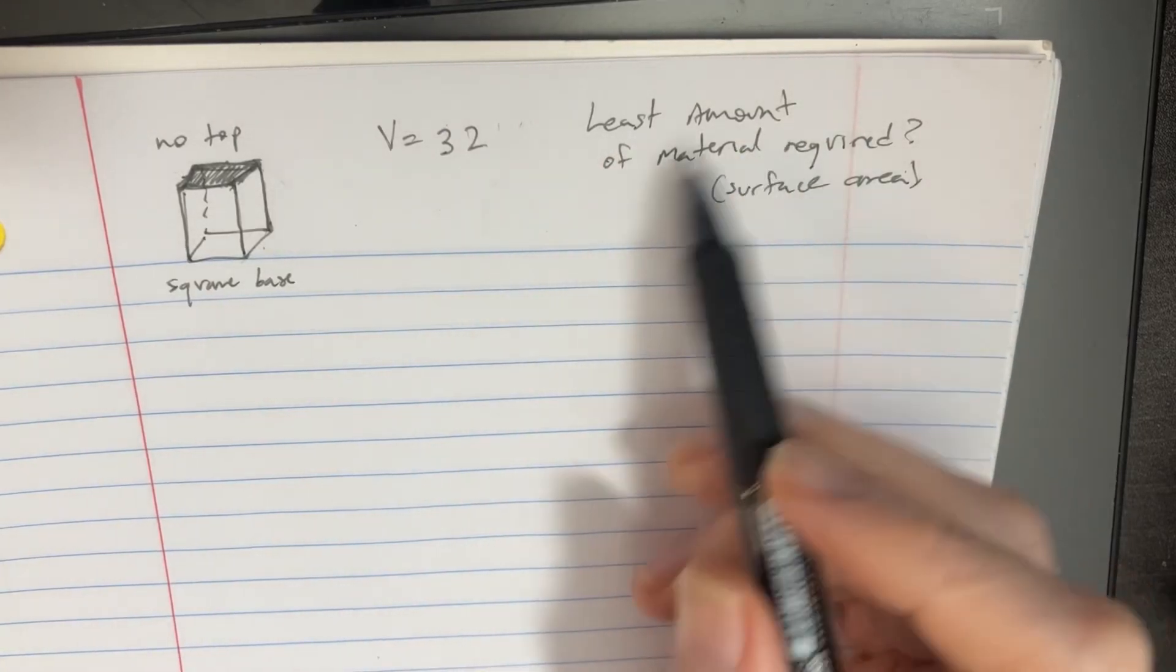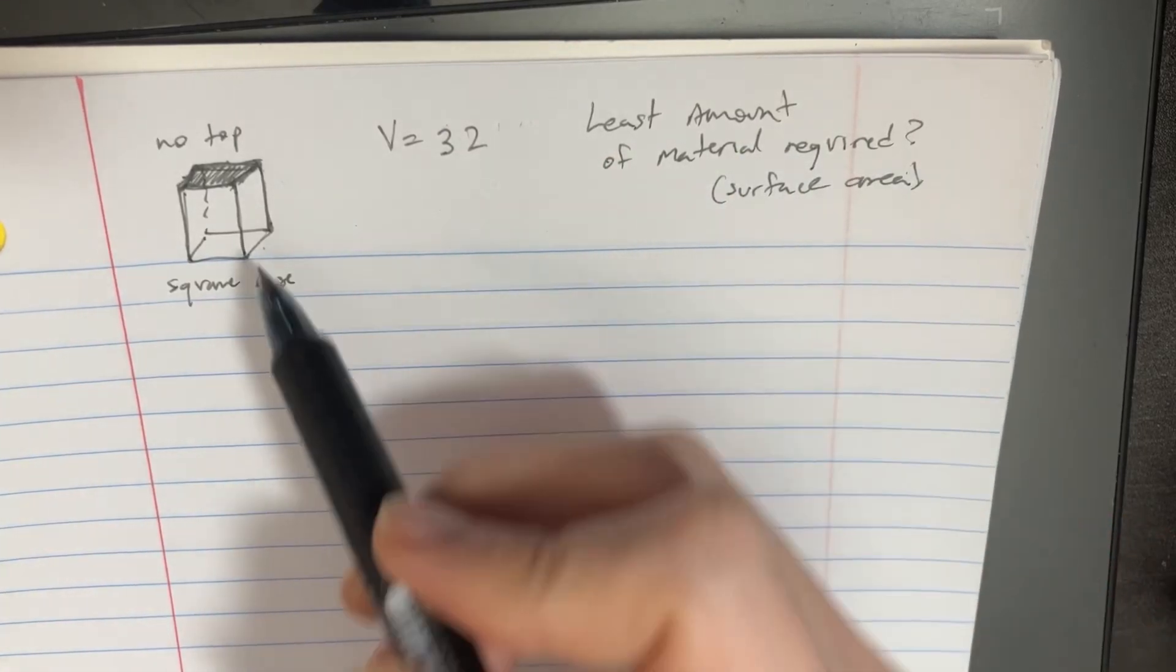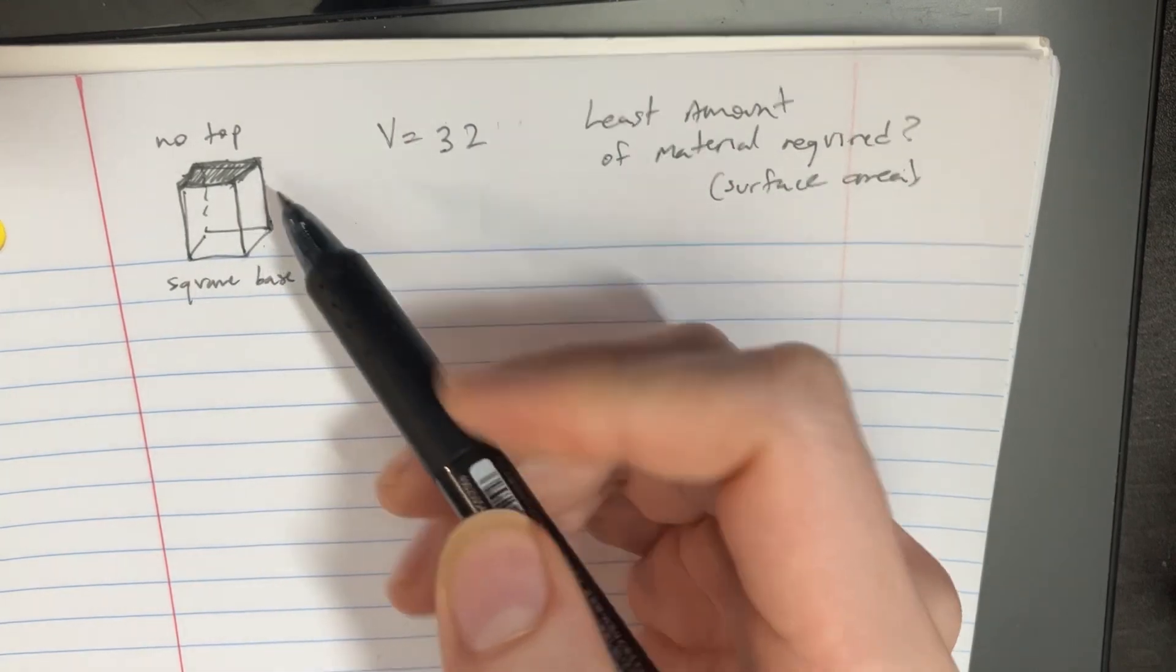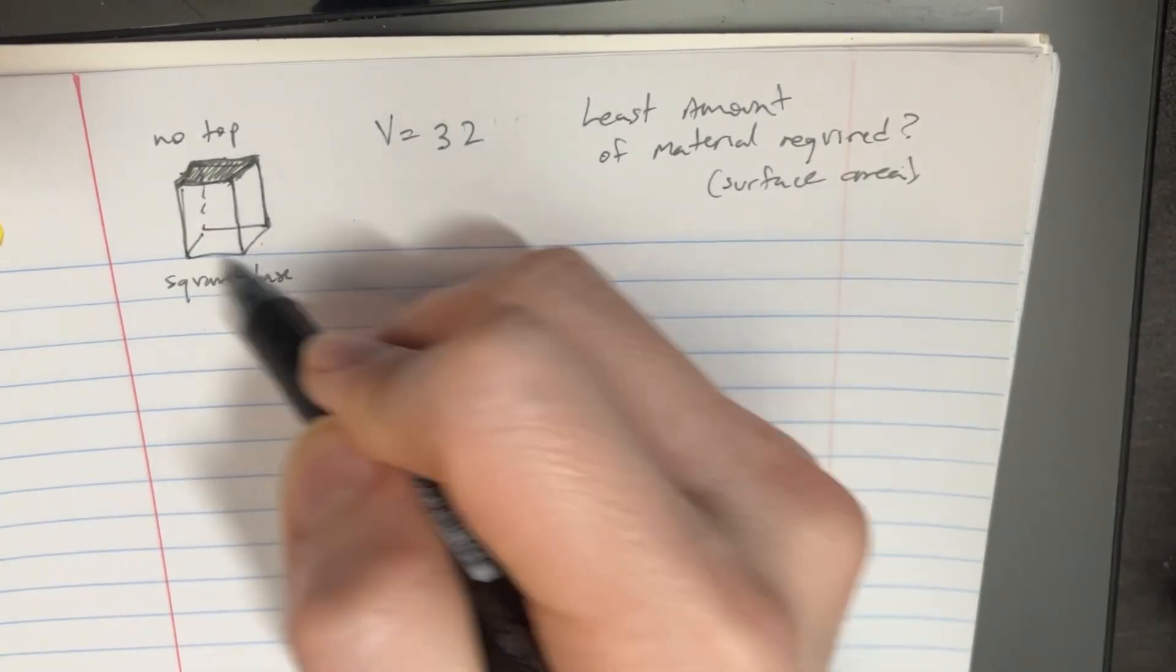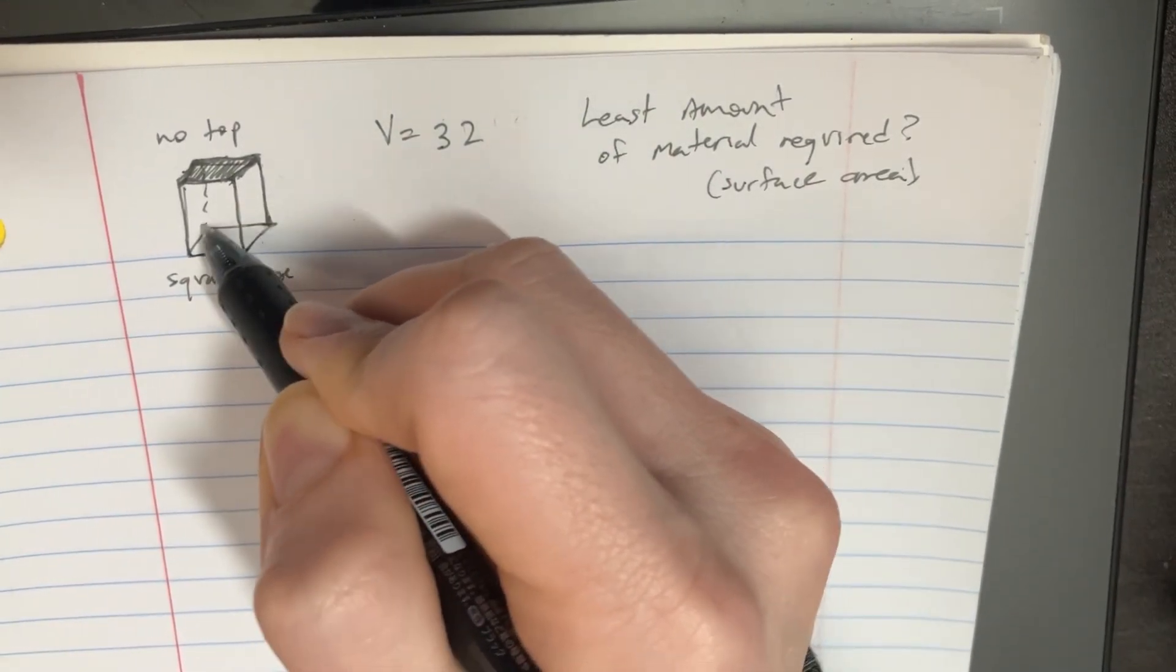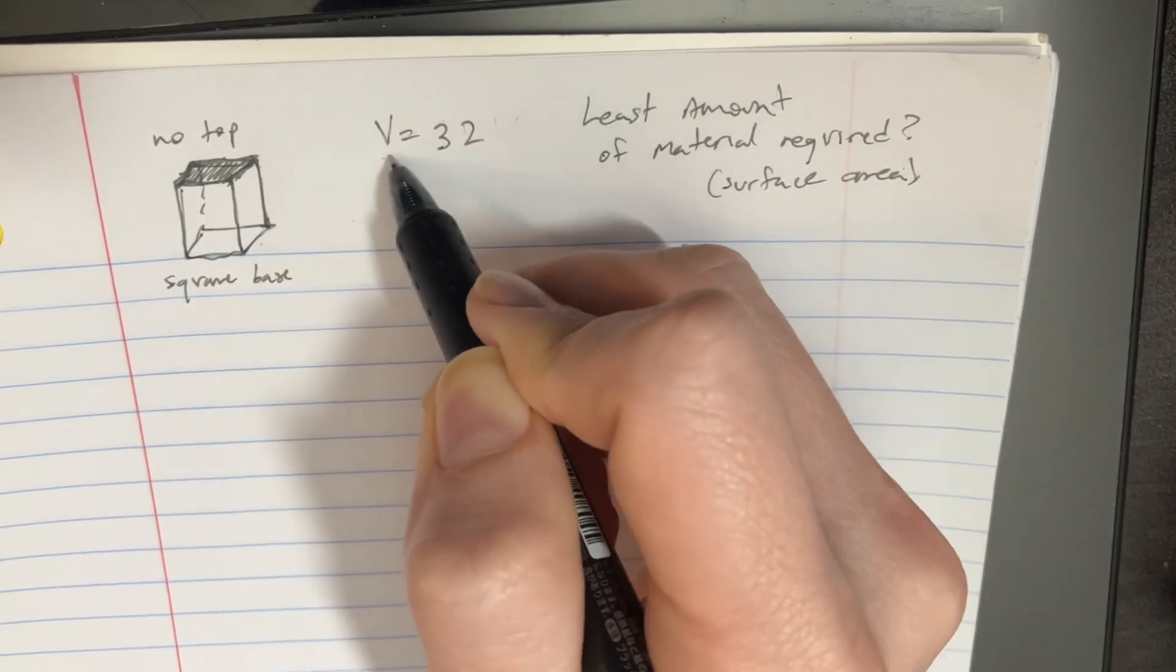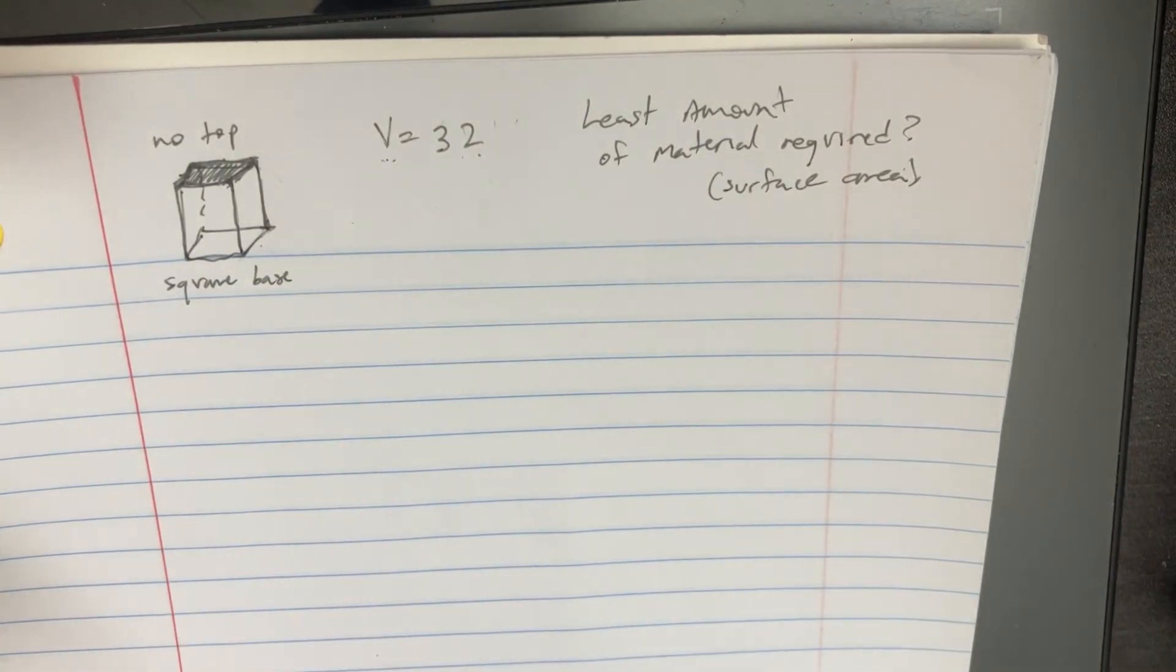We're trying to figure out what the least amount of material required to build a box like this that has no top and a square bottom. We're also given that the volume must equal 32.